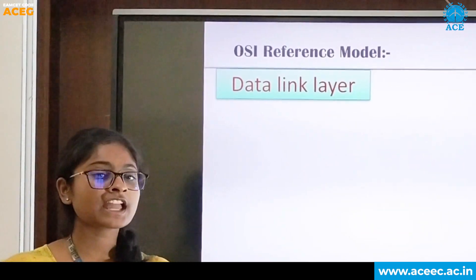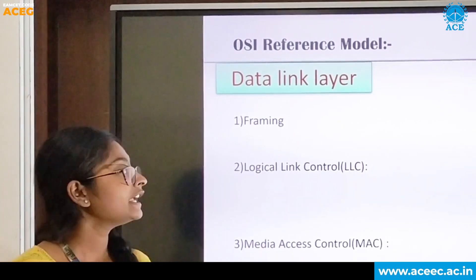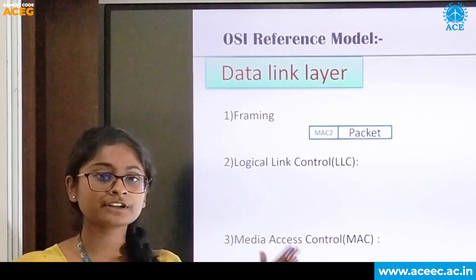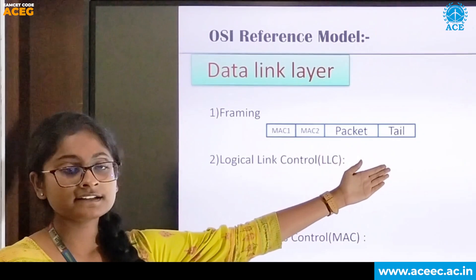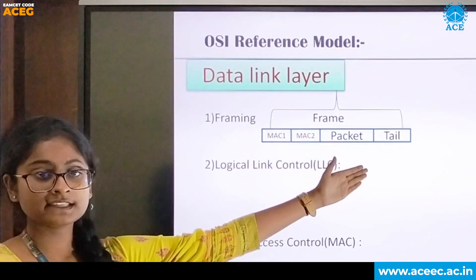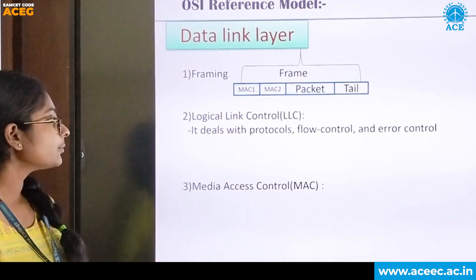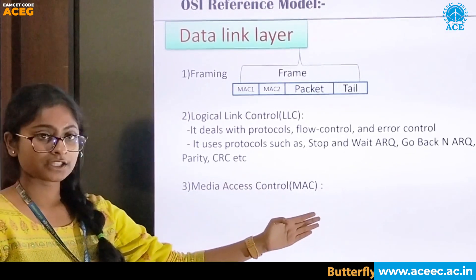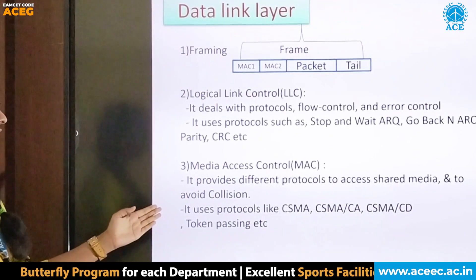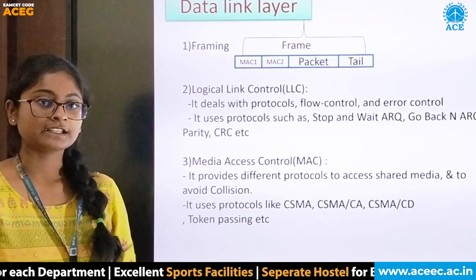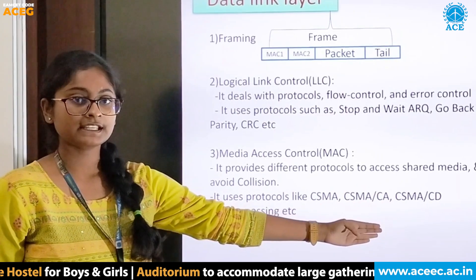In the data link layer, there are three operations: framing, logical link control, and media access control. In framing, the packet from the network layer is added with MAC addresses of the sender and receiver, and a tail is attached to indicate the end of the frame — this entire structure is called a frame. Logical link control deals with error control and flow control protocols such as Stop-and-Wait ARQ, Go-Back-N ARQ, parity, and CRC. Media access control provides protocols to access shared media and avoid collision, using CSMA, CSMA/CA, CSMA/CD, and token passing.